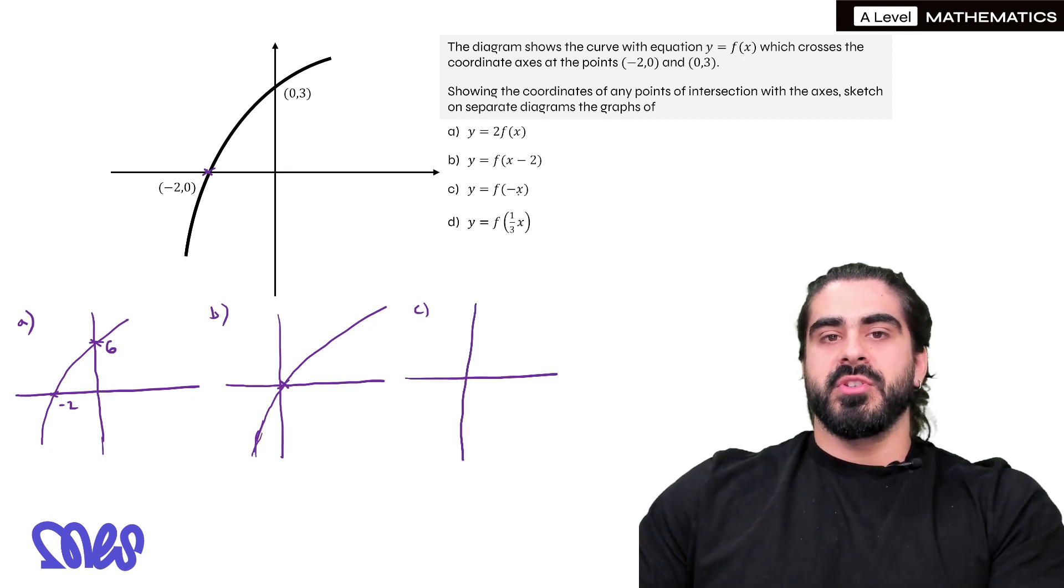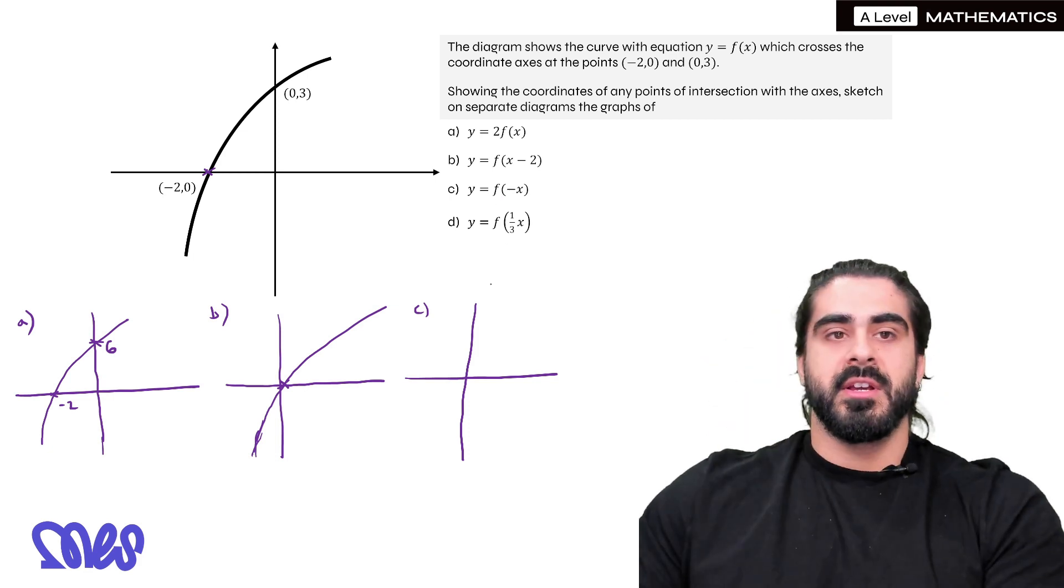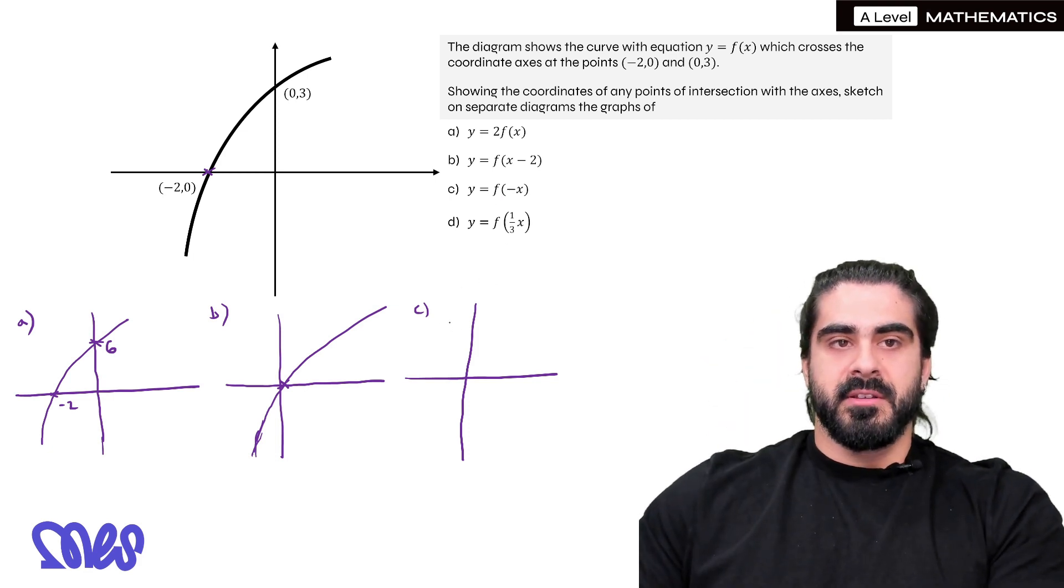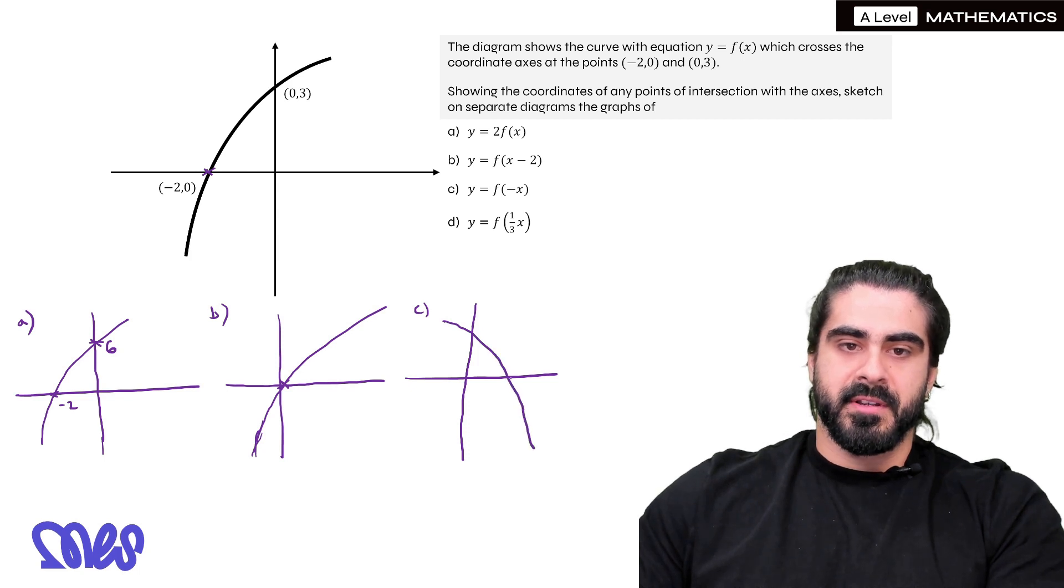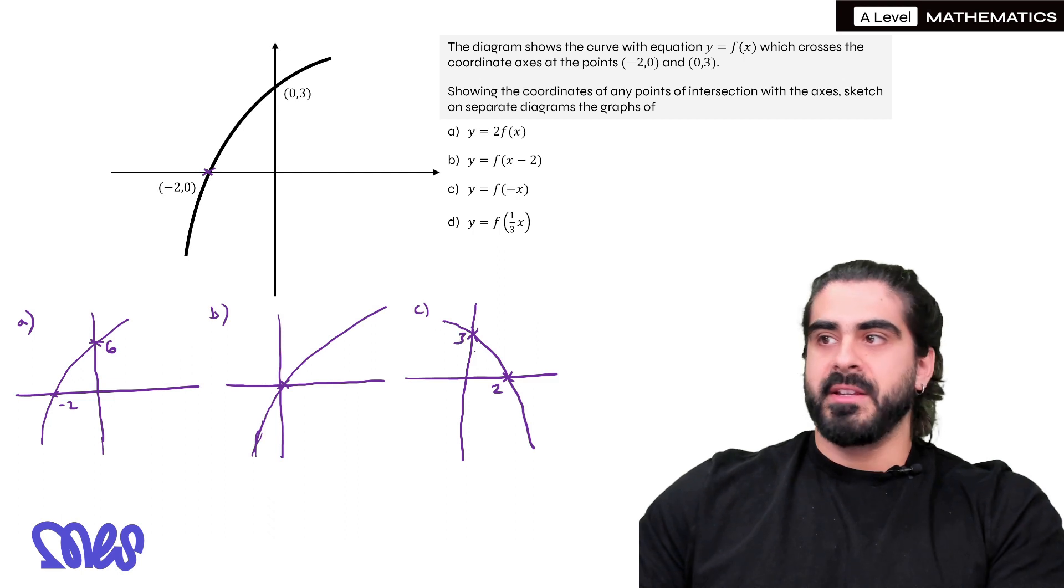So part c. f(-x). So this one you're timesing all the x values by minus 1. So it's a reflection in the y-axis. So it's going to look the same but we're mirroring on the y-axis. It's going to look something like this. And this will cross at 2 instead of minus 2. And (0,3) does not get affected.